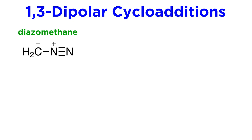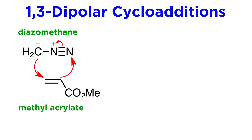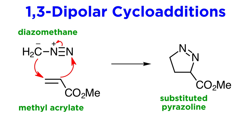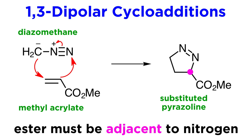We recently learned about diazomethane, and this will work well as a 1,3-dipole. Let's react this with methyl acrylate, and we will produce this substituted pyrazoline, which refers to the fact that the two nitrogen atoms have a double bond between them. For reasons regarding frontier orbitals, the ester must end up adjacent to the terminal nitrogen — it can't be on the carbon opposite the nitrogen atoms — so there's the regiochemistry we mentioned.